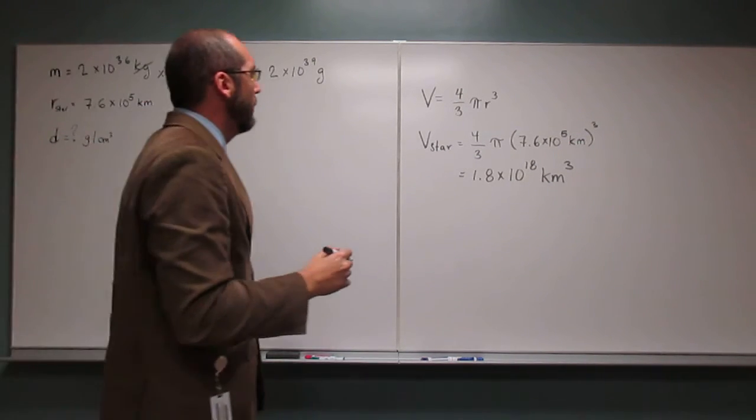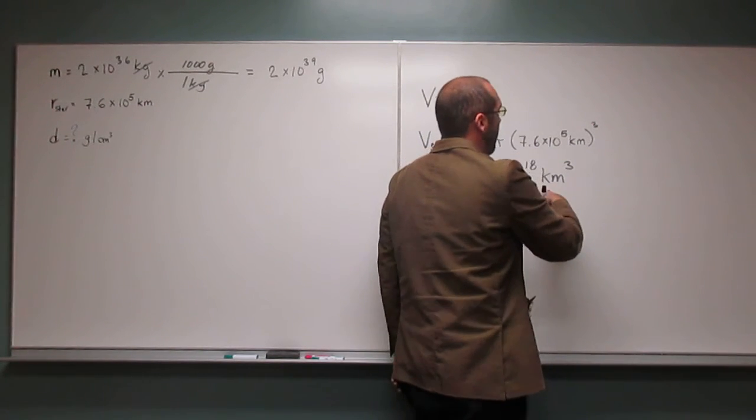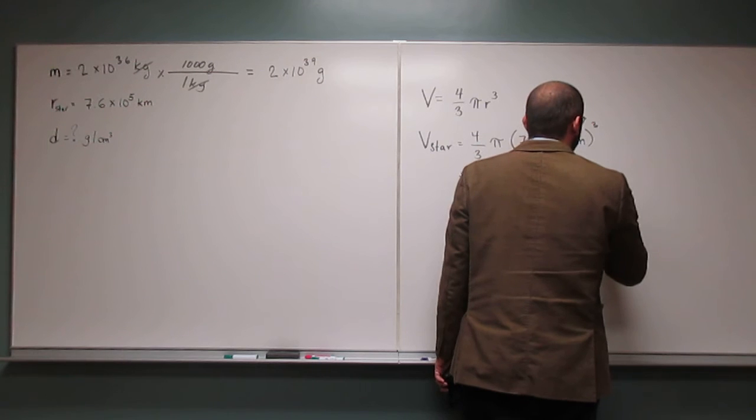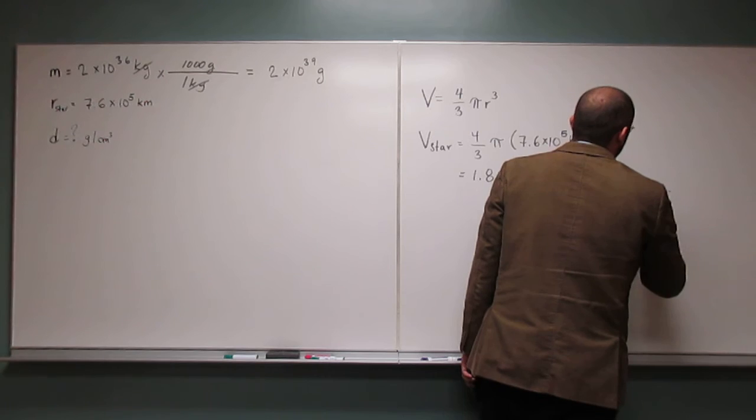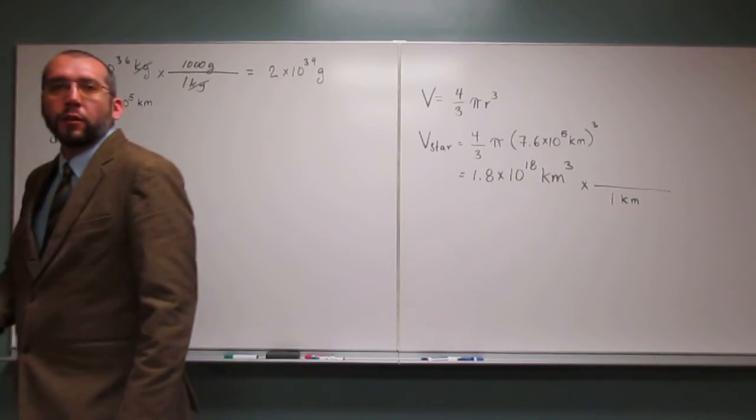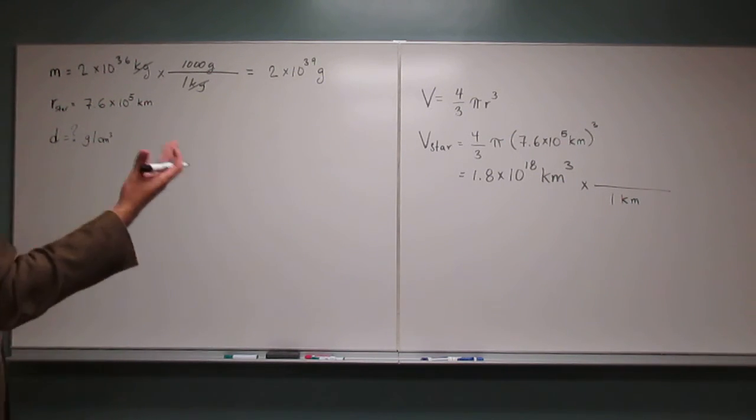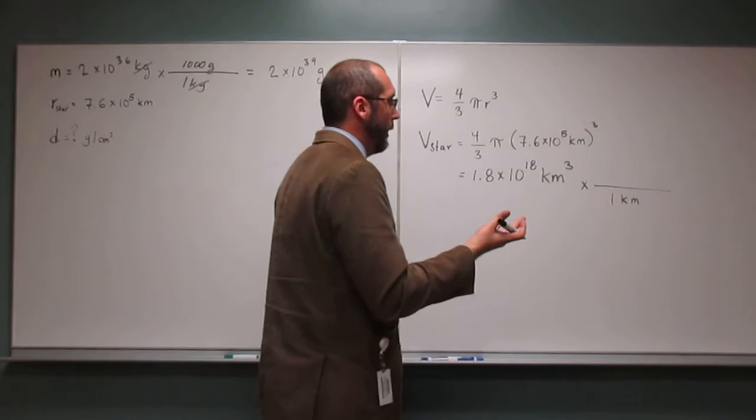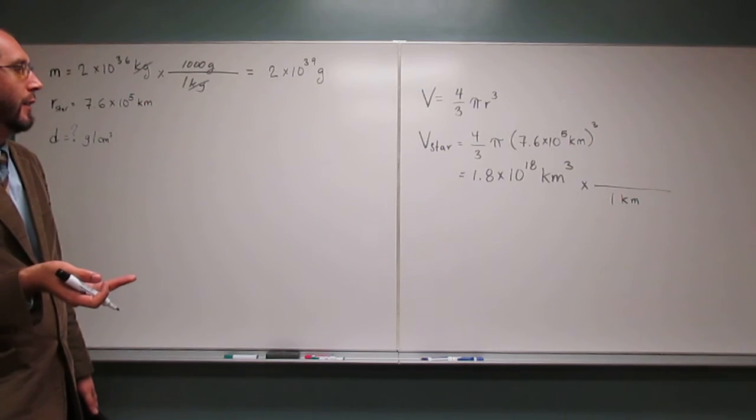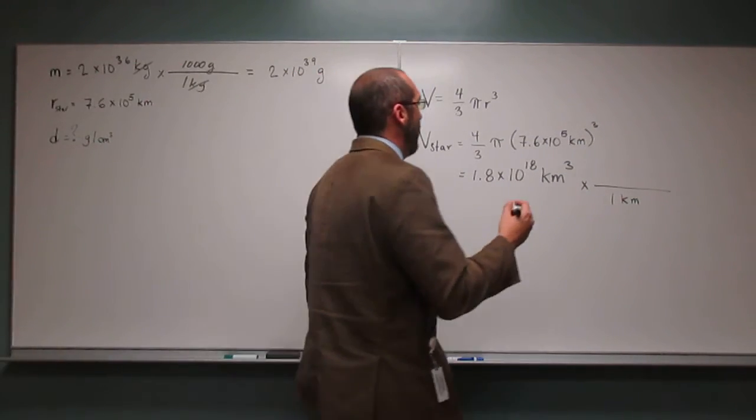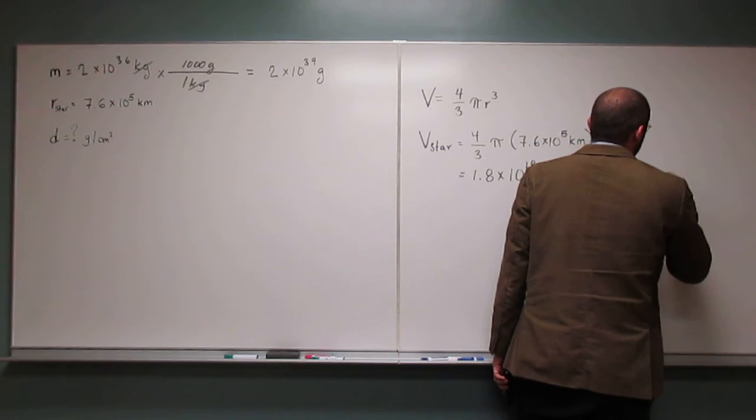So remember here, for every kilometer, we've got to figure out what's the conversion. 1 kilometer, how many centimeters do we have per each kilometer? So remember, a kilometer is 1 to the 3rd meters, and a meter is 1 to the 2nd centimeter. So if you add those two up, every kilometer is 1 times 10 to the 5th centimeters.